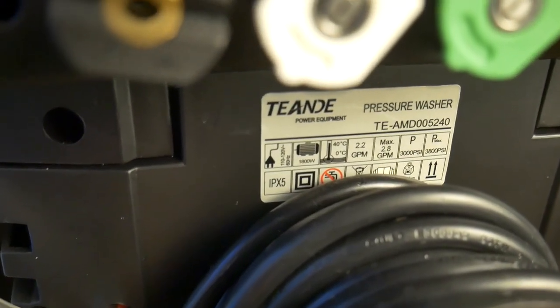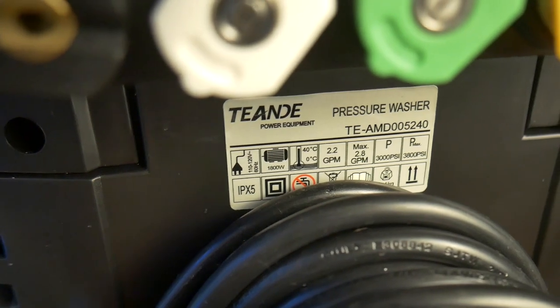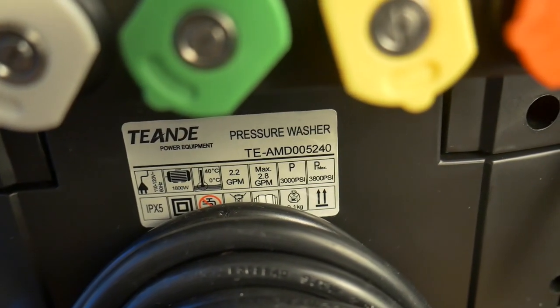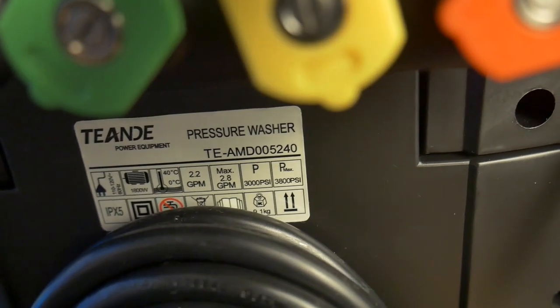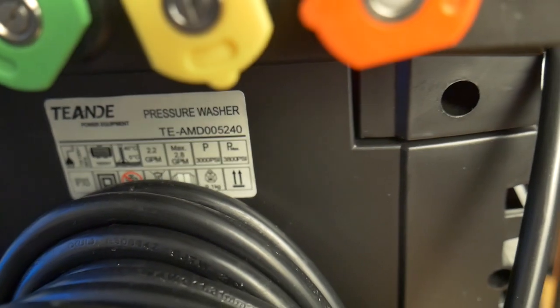The label boasts a maximum pressure of 3800 PSI. This number is likely exaggerated. My rule of thumb is to take the normal pressure rating and divide by two and that is likely a closer approximation of the kind of pressure you should be expecting.